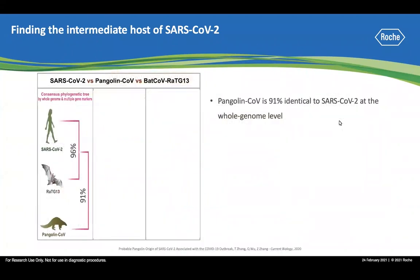Based on our experience with previous human coronavirus outbreaks, such as SARS-CoV-1 and MERS-CoV, the virus likely first jumped from bats into an intermediate animal host. From there, it mutated, evolved, and gained additional genomic features before spilling over into humans. Identifying the intermediate animal host will help break interspecies transmission.